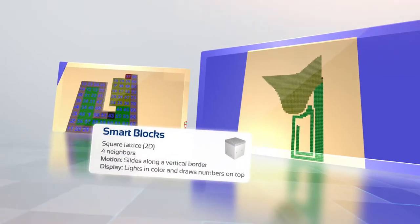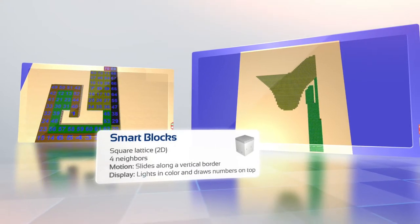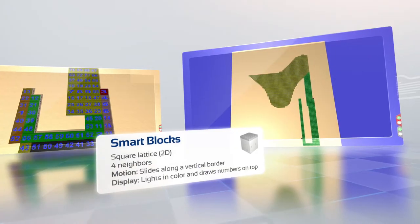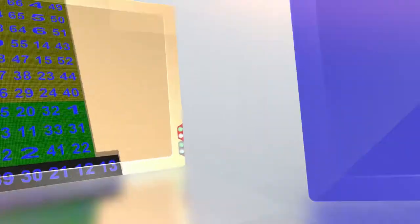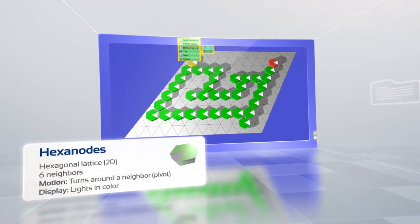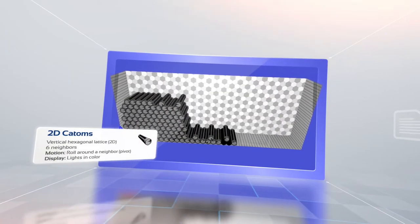Several kinds of robots can be simulated and VisibleSim is designed to easily add new robotic architectures. Smart blocks move in a 2D square lattice, sliding along each other, whereas hexanodes turn around a neighbor in a 2D horizontal hexagonal lattice and 2D catombs in a 2D vertical hexagonal lattice.